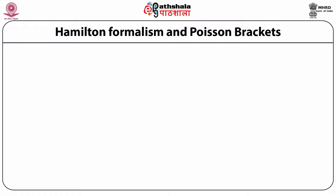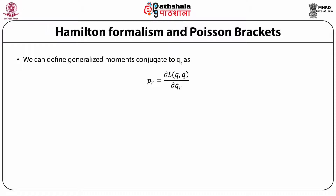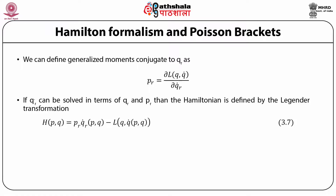We next go to the Hamiltonian formalism and the definition of Poisson brackets. We can define the generalized momenta conjugate to qr as pr, which equals dL/dqr-dot. If qr-dot can be solved in terms of qr and pr, then the Hamiltonian is defined by the Legendre transformation. We have gone from variables qr and qr-dot to variables qr and pr. The Hamiltonian can be written as pr times qr-dot minus the Lagrangian L, where qr-dot is expressed in terms of p and q.